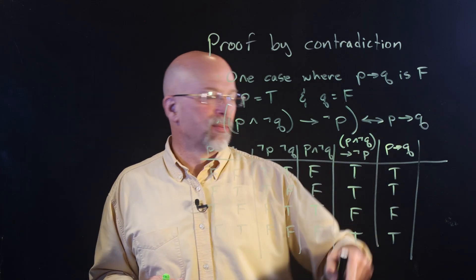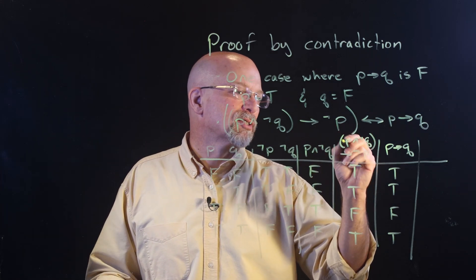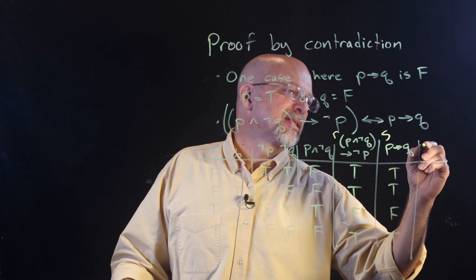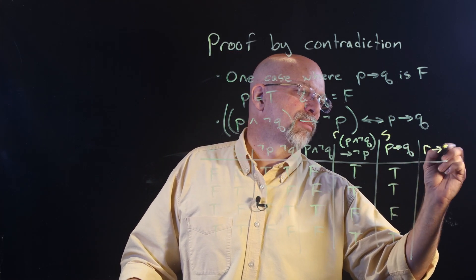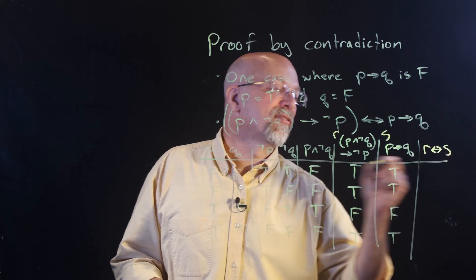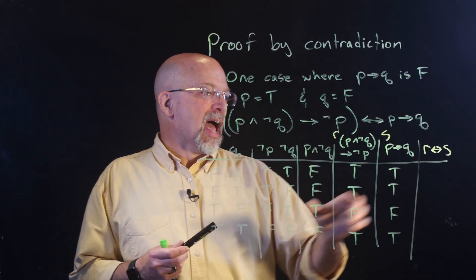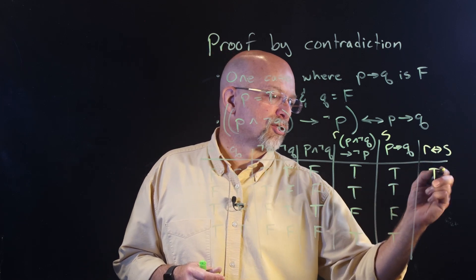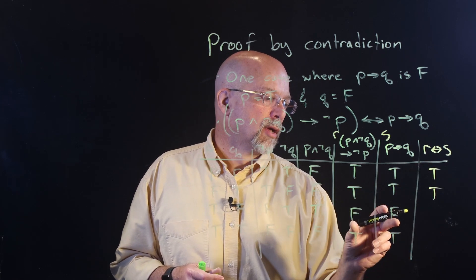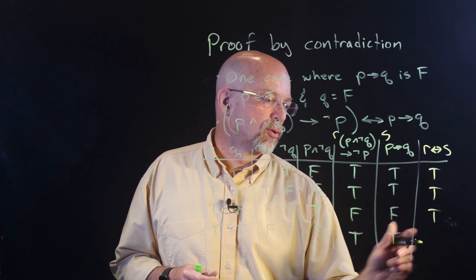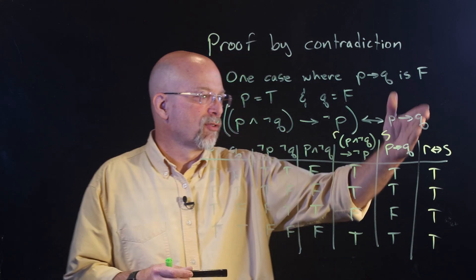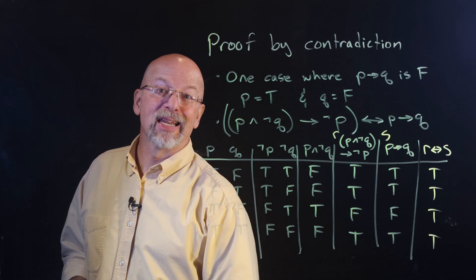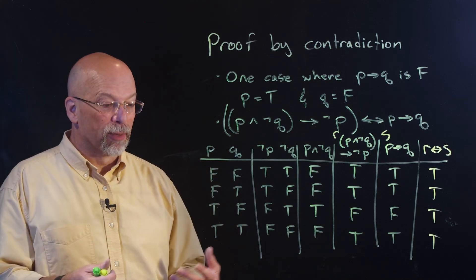We have our tautology, which proves that proof by contradiction is a sufficient way to prove something.